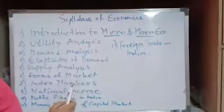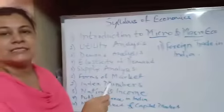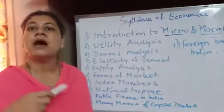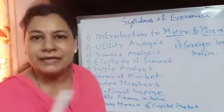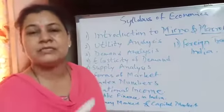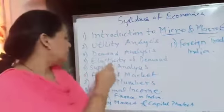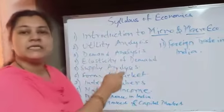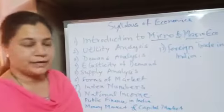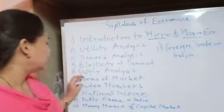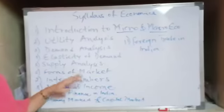Fourth one is elasticity of demand. Elasticity of demand means how the demand varies in the market. Next is supply analysis.